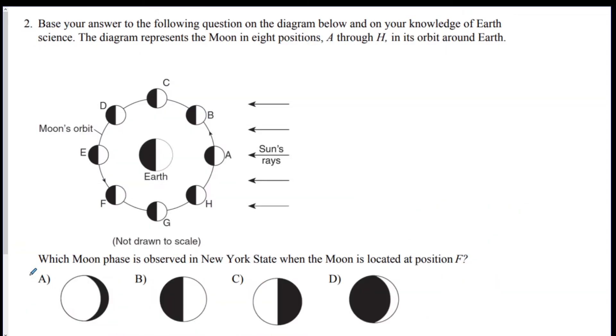Number two, which Moon phase is observed in New York State when the Moon is located at position F? So in order to do this, I'm going to draw a person on the planet right there, and they're only going to see that part. They're not going to see this back half of the Moon. So to this person, the left side is 3 quarters lit, and the right side has a little sliver of darkness. So if you look at A, the left side is 3 quarters lit, and the right side has a little sliver of darkness. This is your answer. This is a waning gibbous.